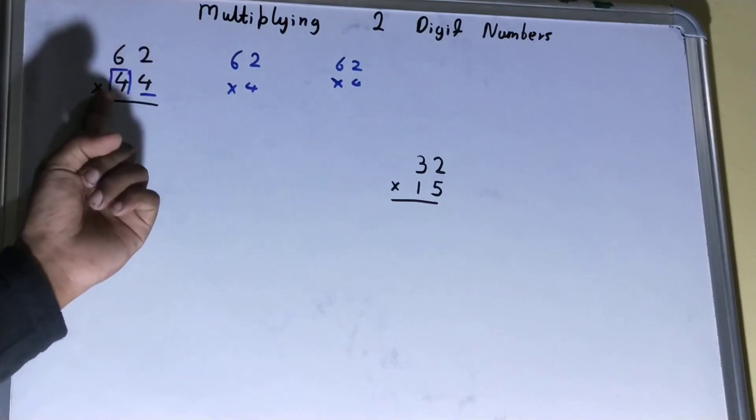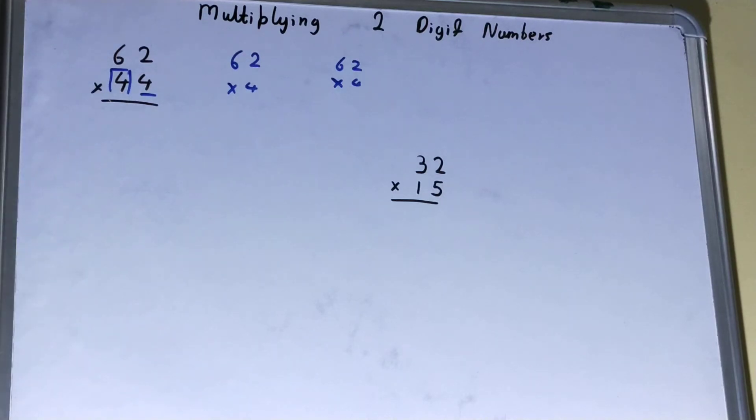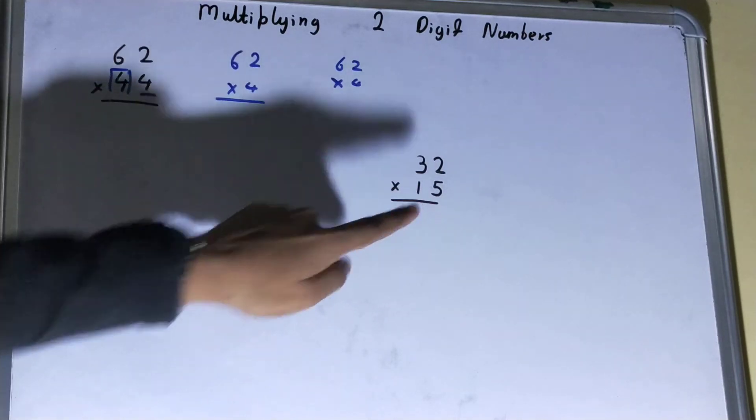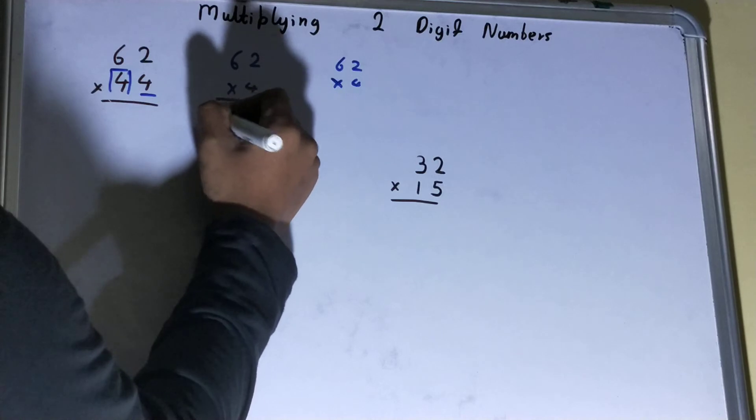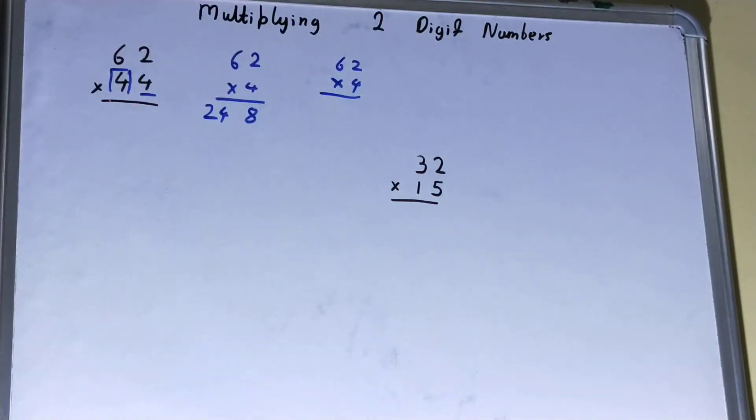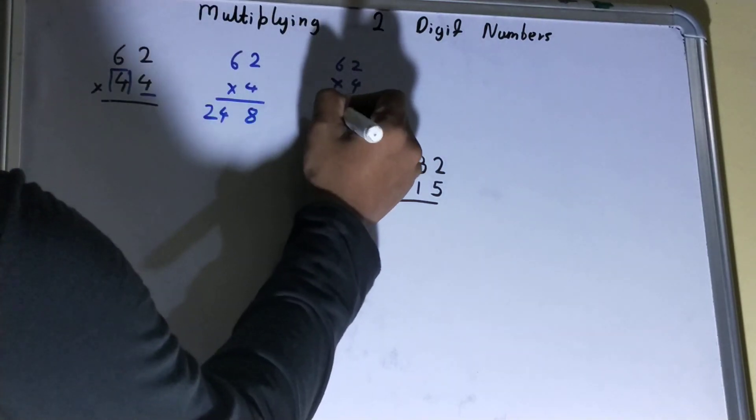So, 4 times 2 is 8, and 6 times 4 is 24. Now here also we have got the same multiplier, so the answer will be the same, that is 248. But see, for this 4 we'll write the answer like this normally, but when it comes to writing the answer for this 4...